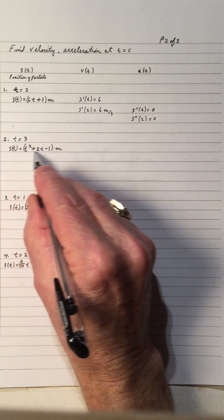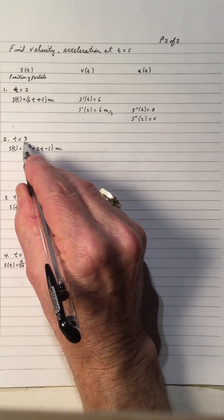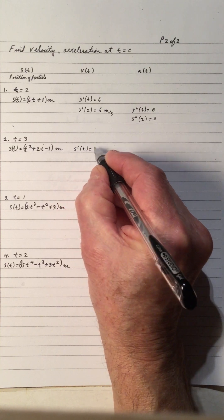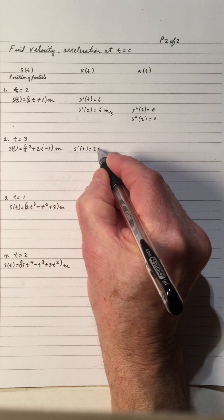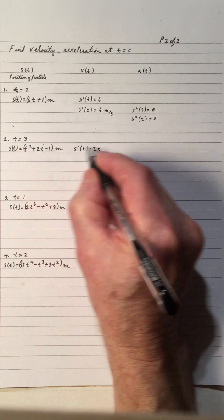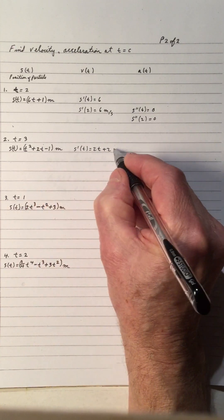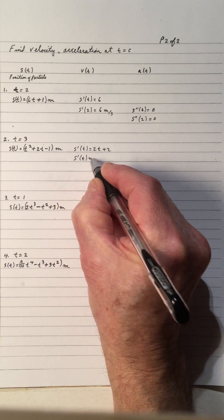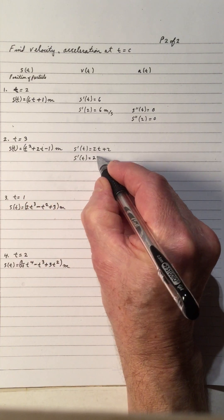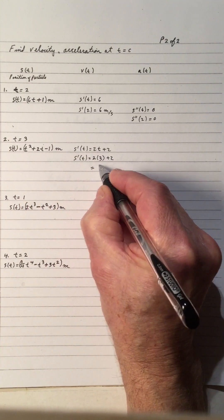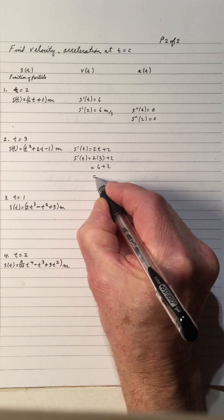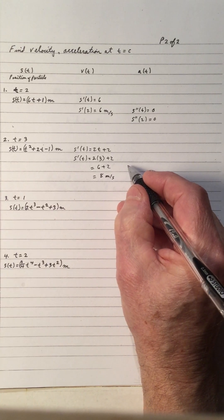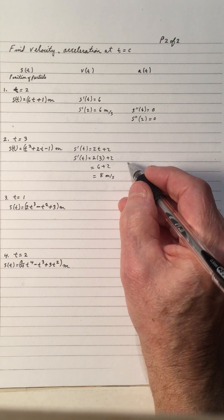Now we have another particle — position function with time at 3 seconds. Let's get the derivative first. The derivative of t squared is 2t, derivative of 2t is 2, and derivative of negative 1 is 0. So the velocity at 3 seconds: we plug in t equals 3, giving 2 times 3 plus 2, which is 6 plus 2 equals 8. So the velocity is 8 meters per second, with distance in meters and time in seconds.